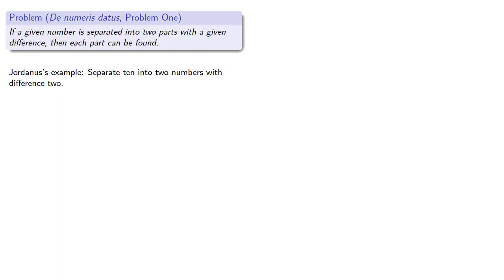Jordanus gave an example. Separate ten into two numbers with difference two. So subtract two to get eight. Half of eight is four, the lesser number, and two more is six, the greater number.